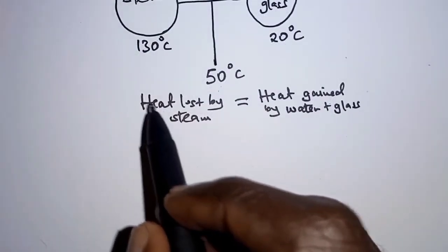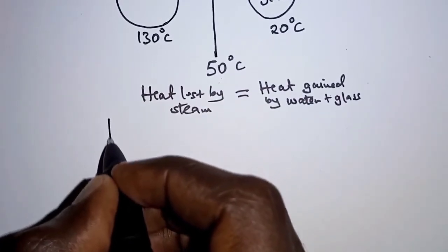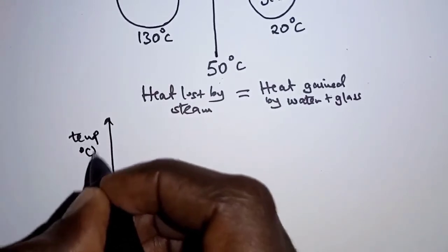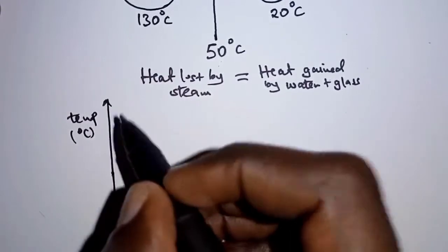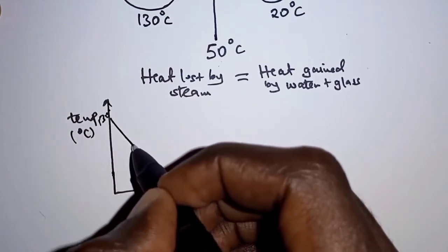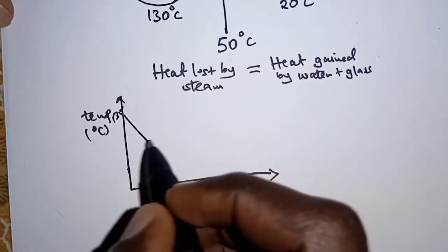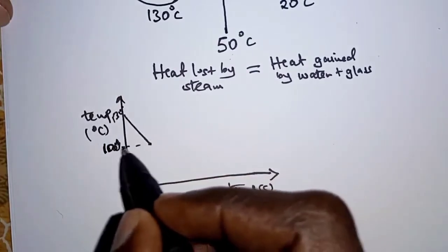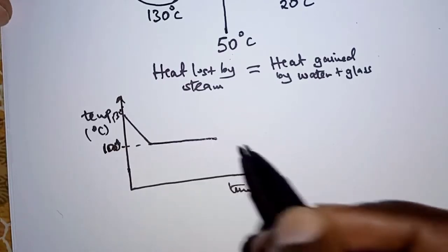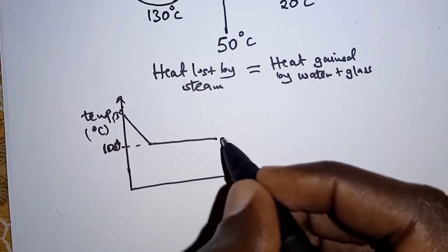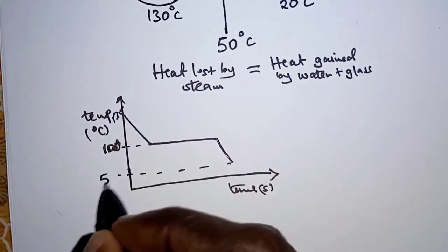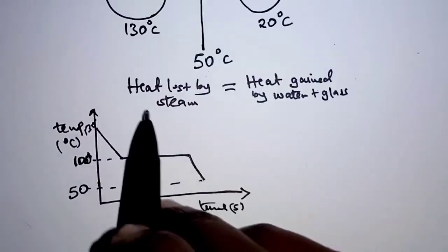Let us consider the temperature change in steam using this graph — a graph of temperature against time. The temperature of steam reduces from 130 degrees Celsius down to 100 degrees Celsius, where there is a change of state occurring at a constant temperature. Then below 100 degrees Celsius the temperature continues to change until it reaches 50 degrees Celsius. On the left-hand side of the equation we are going to have the heat lost by steam.